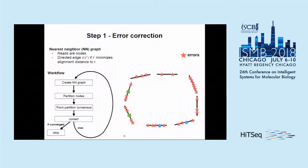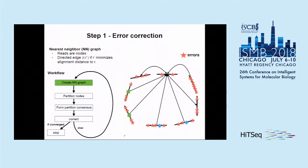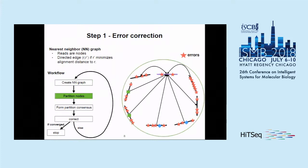In the first error-correction step, we define a nearest-neighbor graph where reads are nodes. We draw a directed edge between R and R' if R' minimizes the alignment distance to R. In an example with eight reads of various error rates, we draw these directed edges, and the read at the top minimizes the alignment distance to all other reads. We then partition the nodes by selecting the reads to which most other nodes point. In this case, the whole graph becomes one partition.